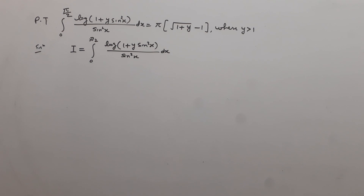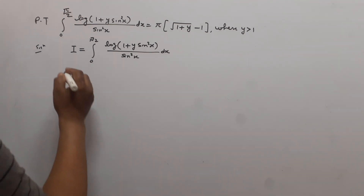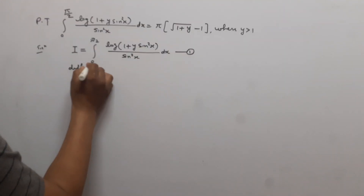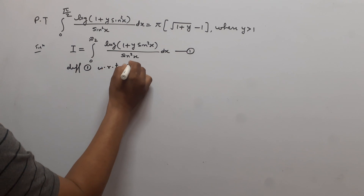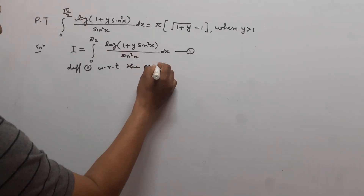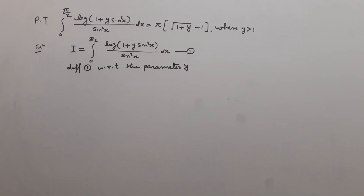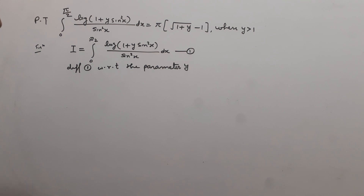Here we can see that y is the parameter because y is independent from x. So first we differentiate this integral with respect to the parameter y. We differentiate equation 1 with respect to the parameter y.